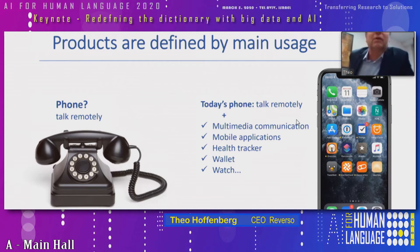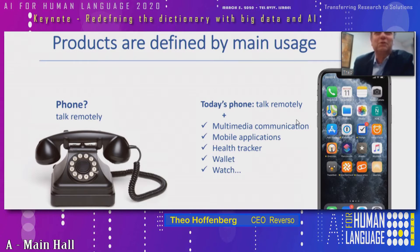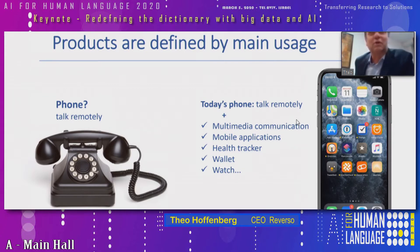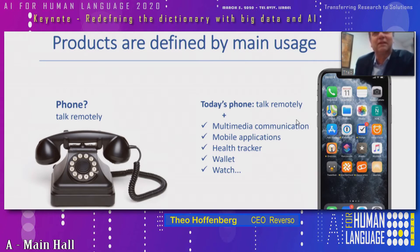The topic is that we redefine the dictionary — it's a kind of play on words. A dictionary usually talks about definitions, and we usually name products by their main usage. For example, if you have a phone, the main usage is to talk remotely. But if you show an old image of a phone to kids, they will not understand that it's a phone, because what we now define as a phone refers to something very different graphically and functionally.